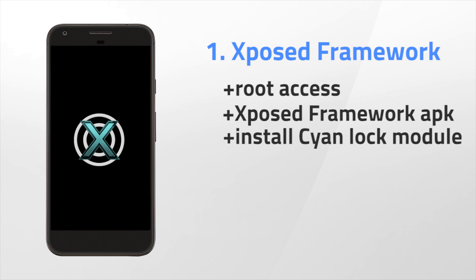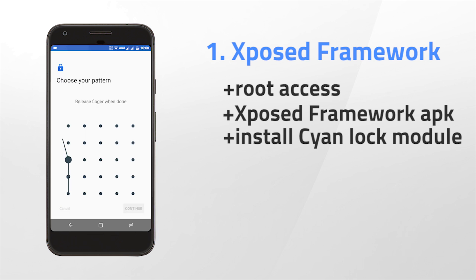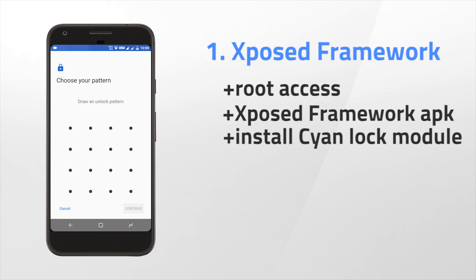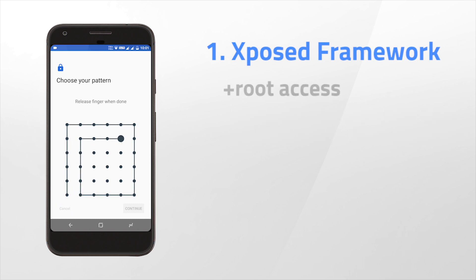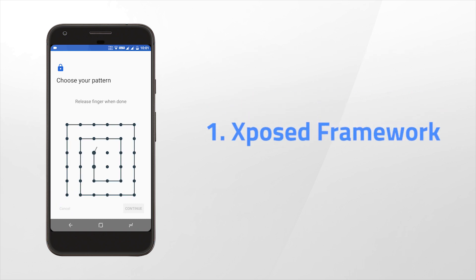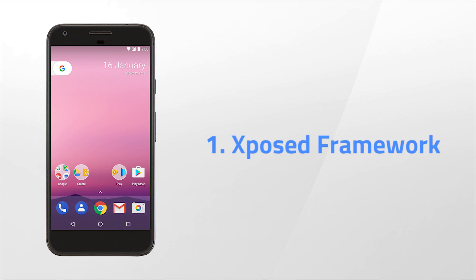Everything else is straightforward — you can easily enable the 6x6 pattern lock. The good thing about this method is you can also try 5x5 or 4x4 if you want. I personally use 4x4 because I think it's the sweet spot for pattern lock. So the second method to get a 6x6 pattern lock is by using a custom ROM.